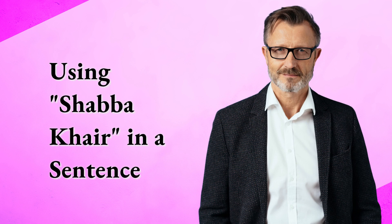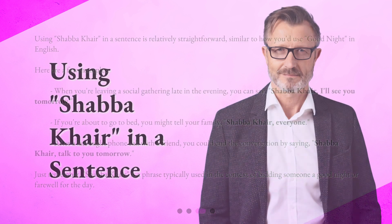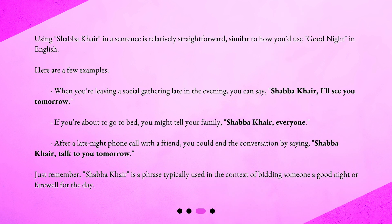Using Shabba Khair in a sentence is relatively straightforward, similar to how you'd use 'good night' in English. Here are a few examples. When you're leaving a social gathering late in the evening, you can say, 'Shabba Khair, I'll see you tomorrow.' If you're about to go to bed, you might tell your family, 'Shabba Khair, everyone.'